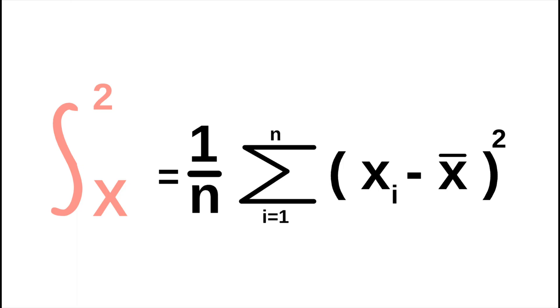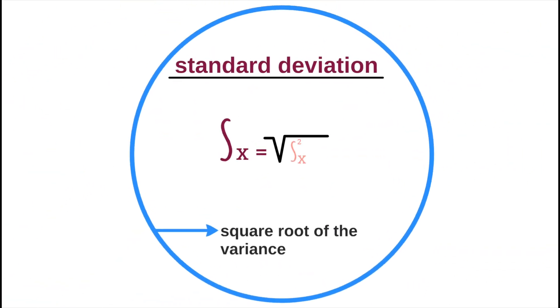Now onto standard deviation. Standard deviation is simply the square root of the variance. The variance is squared to ensure a positive value, and with the standard deviation, we simply take the square root of the variance to obtain a meaningful value that can be directly compared to the examined data series.